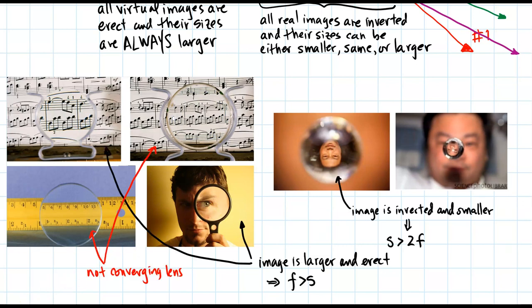In summary: the image of the man in the bubble is inverted and smaller, so the object must be outside of 2F. The music note and the man with the magnifying glass produce images that are larger and erect, meaning the object must be inside the focal length.